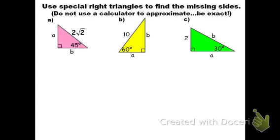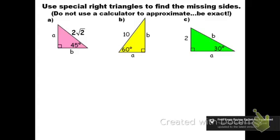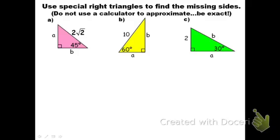Here are three examples. In the direction that says use special triangles to find the missing sides — sometimes as a little warning, I'll say don't use your calculator or give exact answers. The pink triangle has a 90 degrees and 45 degrees. By triangle angle sum, the three angles must add to 180, so the other angle must also be 45. So this is a 45-45-90 triangle.